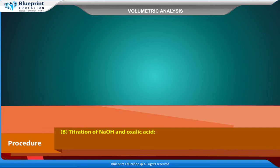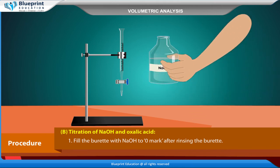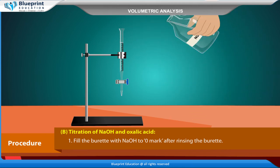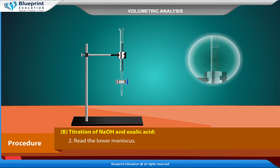Titration of NaOH and oxalic acid: Fill the burette with NaOH to 0 mark after rinsing the burette. Read the lower meniscus.